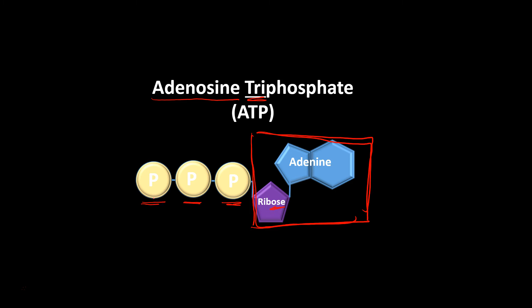When we look at these three phosphates, there's actually energy stored in the bonds between each phosphate. The energy stored between the second and third phosphate is a high amount of energy. That energy is actually unstable, so this third phosphate wants to break off. And when it does break off, there's a lot of energy released, and our cells are going to use that energy to do their jobs.